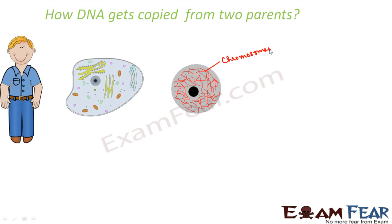The number of chromosomes in a species is fixed. For example, in human beings there are 46 chromosomes inside each cell of our body. When we look at a chromosome even more closely, it looks as if there are two strands which are joined together. The structure which joins these two strands is known as centromere because it joins them at the center, and each of these strands is known as a chromatid.